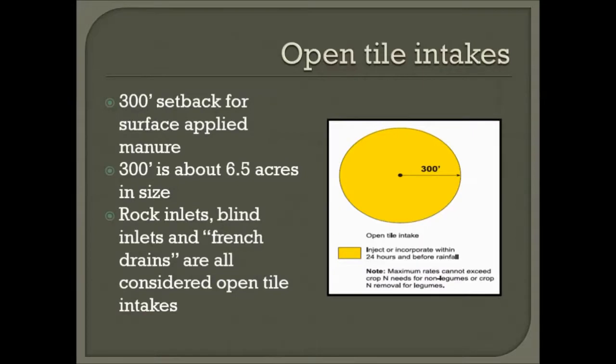Open tile intakes can be incorporated right up to the intake, but there's a 300-foot setback for surface-applied manure. Note that 300 feet is about six and a half acres, so if an area has surface tile intakes and you're surface applying, plan ahead and incorporate around those intakes. Rock inlets, blind inlets, and French drains are all considered open tile intakes and require the 300-foot setback if surface applying.